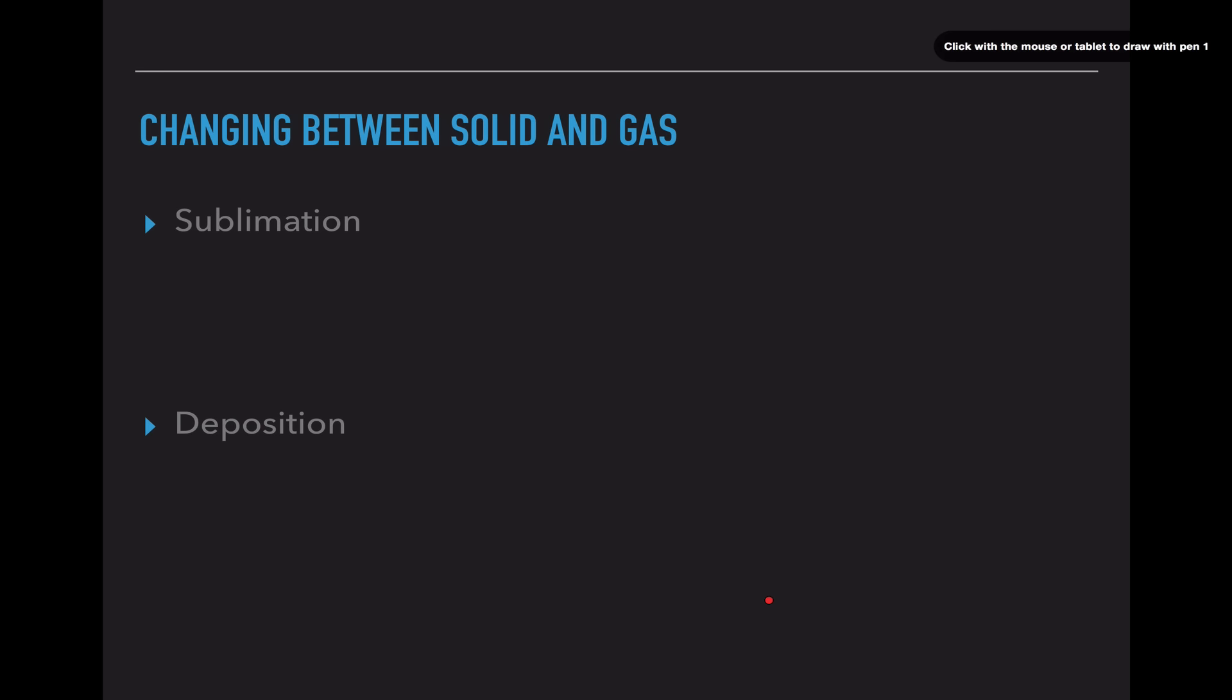Sublimation is jumping straight from solid to gas—energy increases a lot. We have a huge jump, completely skipping a phase, and particle attraction decreases a lot. Deposition is the exact opposite: going from gas straight to solid. Energy decreases a lot and particle attraction increases a lot.